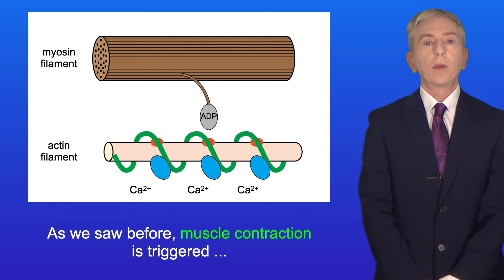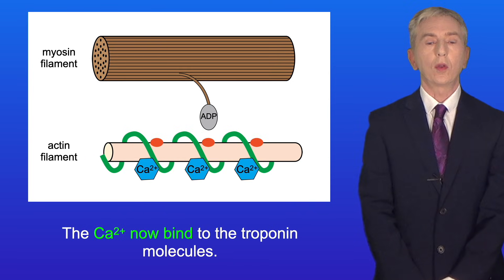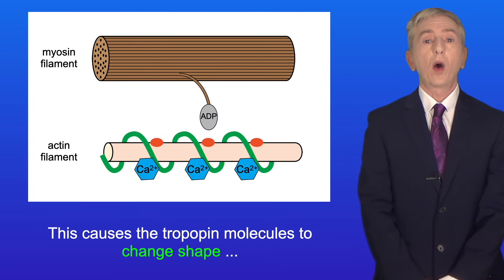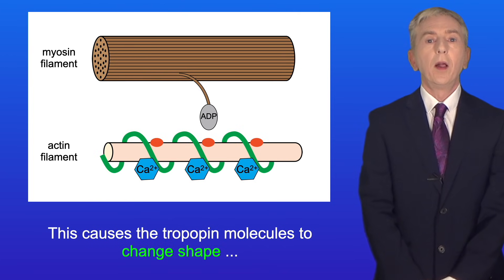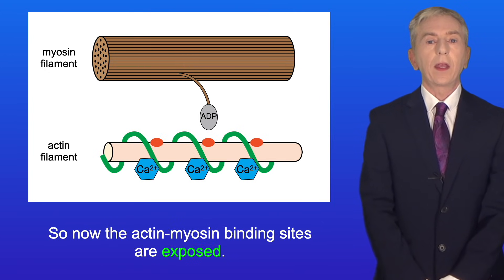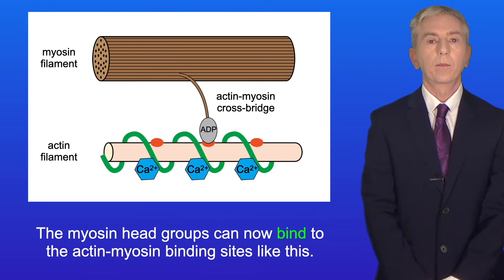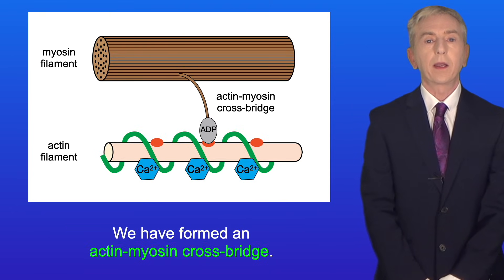As we saw before, muscle contraction is triggered when calcium ions are released from the sarcoplasmic reticulum. The calcium ions bind to the troponin molecules, causing the troponin molecules to change shape, moving the tropomyosin away from the actin-myosin binding sites. So now the actin-myosin binding sites are exposed. The myosin head groups can now bind to the actin-myosin binding sites — we've formed an actin-myosin cross bridge.